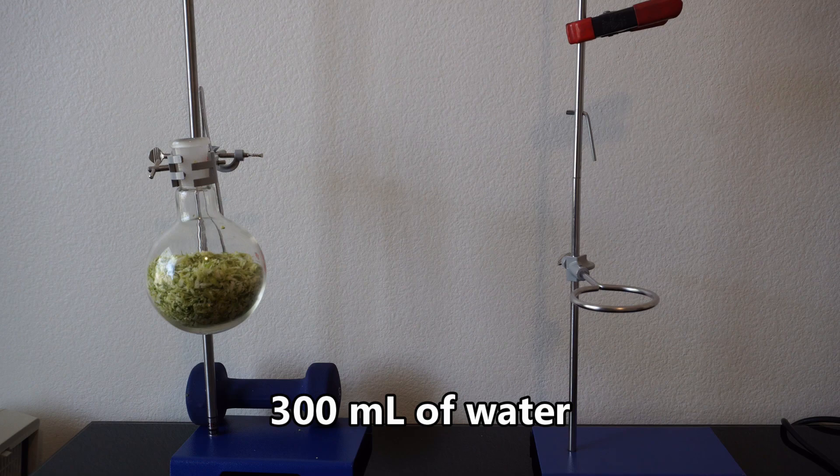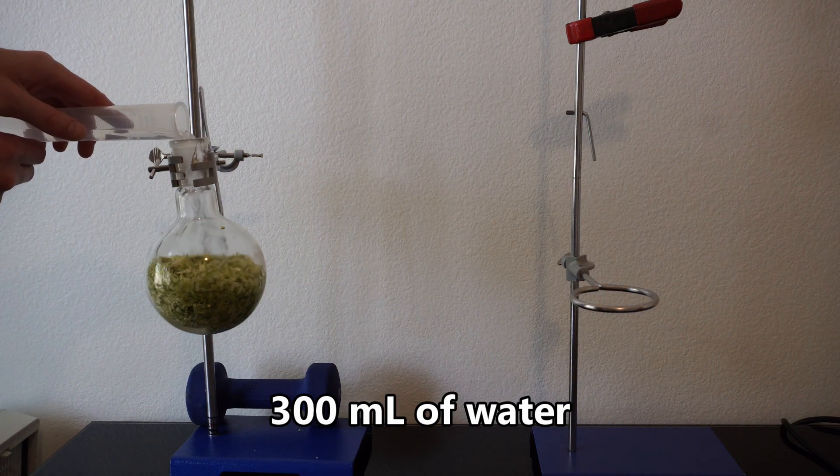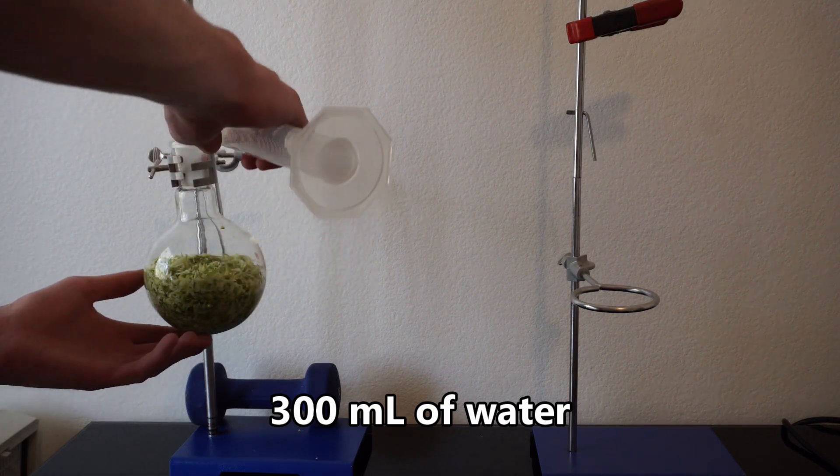I then add about 300 milliliters of distilled water before filling the condenser, placing my receiving flask, and turning on my heating mantle.